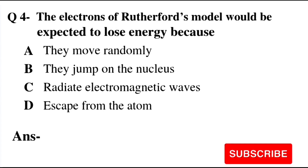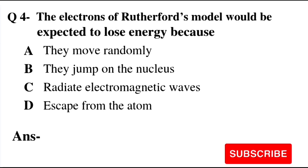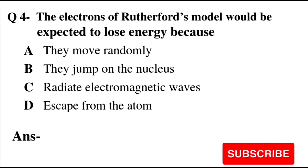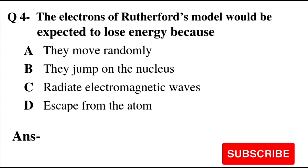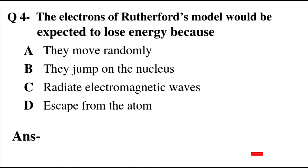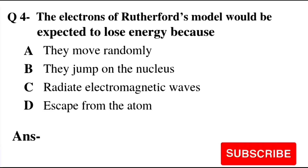Next question: the electrons in Rutherford's model would be expected to lose energy because — Option A: they move randomly. Option B: they jump on the nucleus. Option C: they radiate electromagnetic waves. Option D: they escape from the atom.